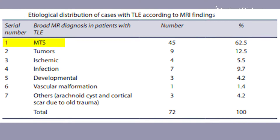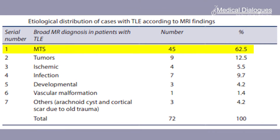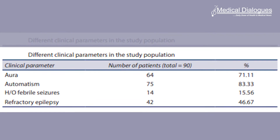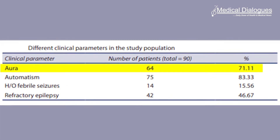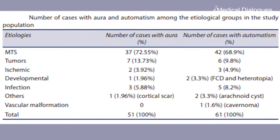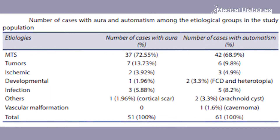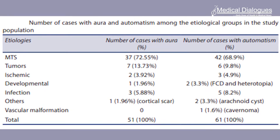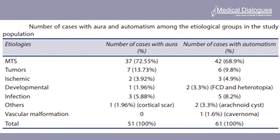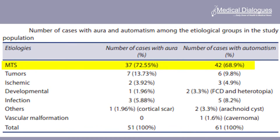Mesial temporal sclerosis was the most common imaging finding in about 60% of the patients. Four out of five patients had an aura, whereas 70% had automatisms. The findings highlighted that the presence of aura in temporal lobe epilepsy patients was significantly associated with mesial temporal sclerosis on an MRI scan.